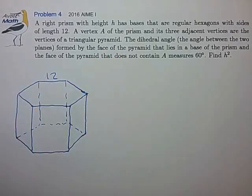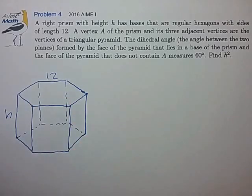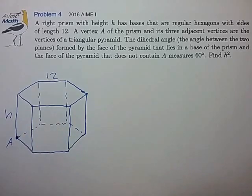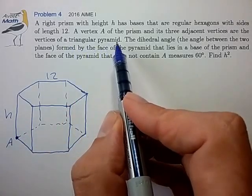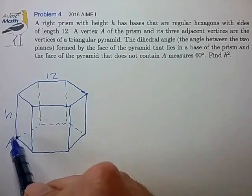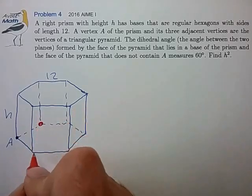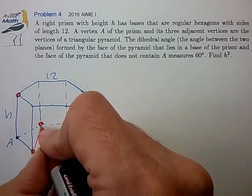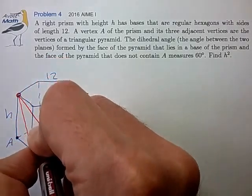The hexagon has side length 12, has height h, and we have a vertex A. It looks like we're going to try to form a triangular pyramid with the three vertices that are adjacent to A. Let me draw those in red. That's this vertex, that vertex, and that vertex, and that forms the triangular pyramid shown.